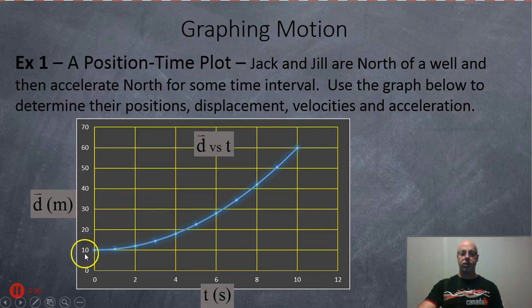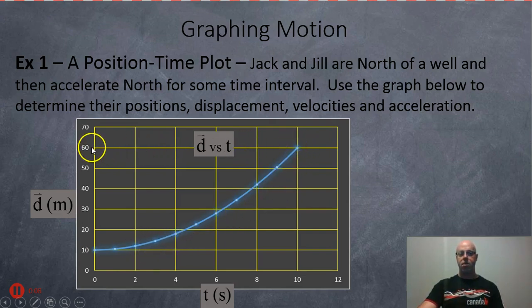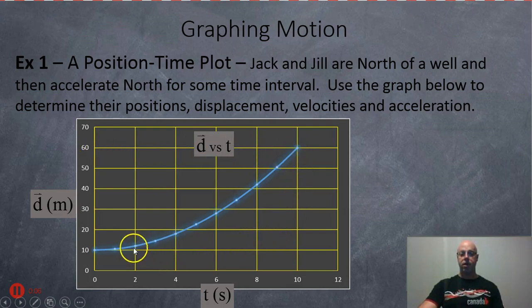As you can see in this graph, they're going to start off 10 meters north of the well — I'm assuming the well is at zero, the reference point. They're going to travel for 10 seconds and end up at 60 meters north of the well according to this position-time graph. You can see it's curved because they're accelerating.